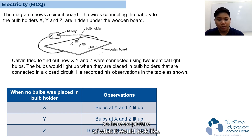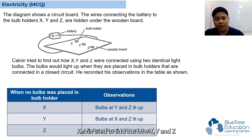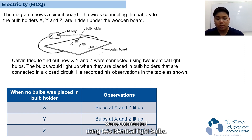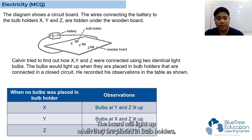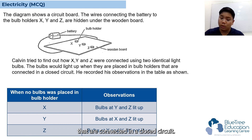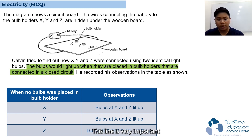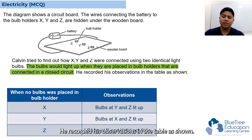So here's a picture of what it would look like. Kelvin tried to find out how X, Y, and Z were connected using two identical light bulbs. The bulbs would light up when they are placed in bulb holders that are connected in a closed circuit. This line was very important. He recorded his observations in the table as shown.